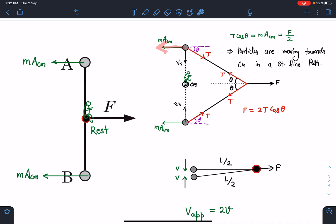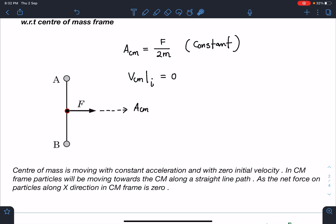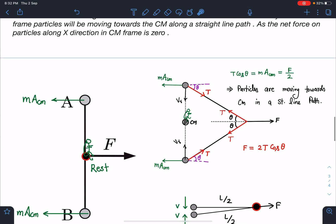So if you see here, this T cos theta, this value is just balancing it. So T cos theta equals m into a_cm. Just substitute the value of m a_cm, because a_cm is F by 2m. So m into a_cm is F by 2.